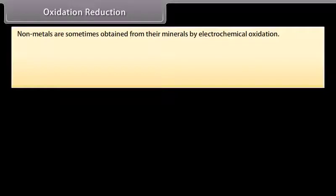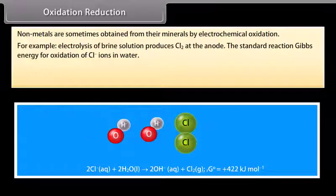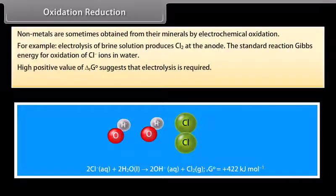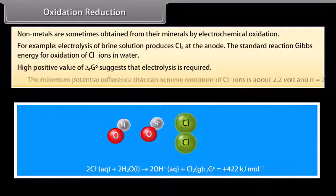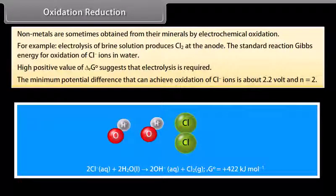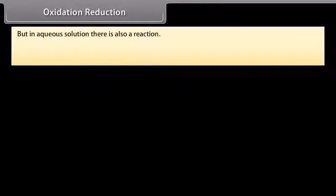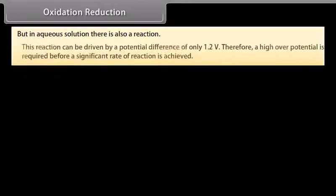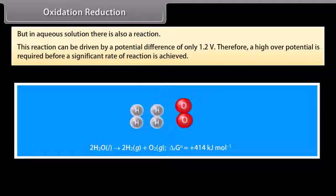Oxidation reduction. Non-metals are sometimes obtained from their minerals by electrochemical oxidation. For example, electrolysis of brine solution produces Cl2 at the anode. The standard reaction gives energy for oxidation of Cl- ions in water. High positive value suggests that electrolysis is required. The minimum potential difference that can achieve oxidation of Cl- ions is about 2.2V and n is equal to 2. But in aqueous solution there is also a reaction. This reaction can be driven by a potential difference of only 1.2V. Therefore, a high overall potential is required before a significant rate of reaction is achieved.